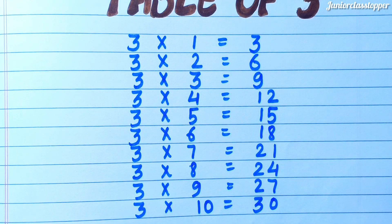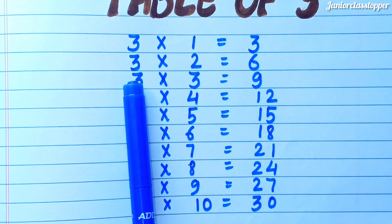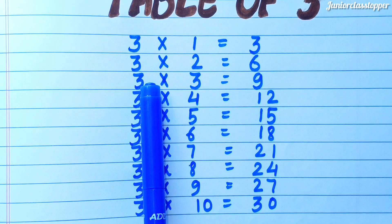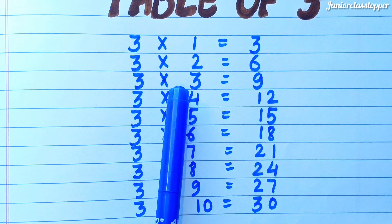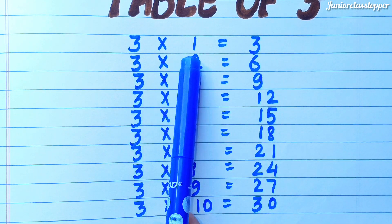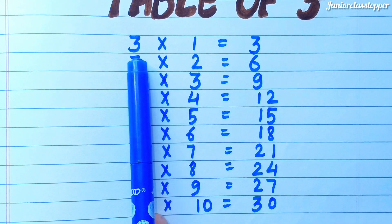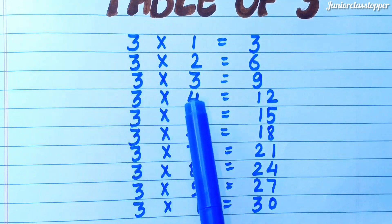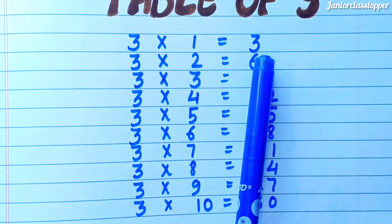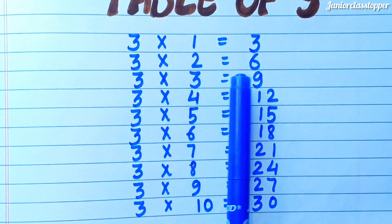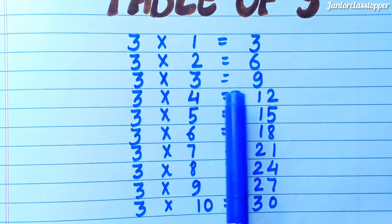तो चलो बच्चों अब हम एक साथ Table को Read करते हैं, आप लोग भी पीछे पीछे रिपीट करो. Three ones are three, Three twos are six, Three threes are nine.